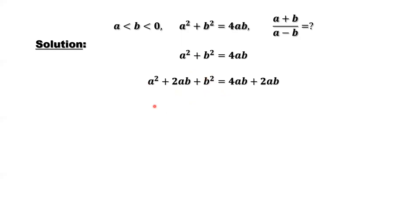Left-hand side is a plus b squared. Right-hand side is 6ab. What is our question? Here is the question. A plus b without square. How to get rid of the square? Take the square root on both sides. We have a plus b equals positive or negative square root of 6ab.